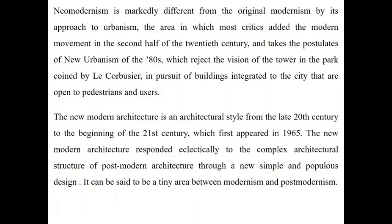Neo-Modern architecture is an architectural style from the late 20th to the beginning of the 21st century, which first appeared in 1965 and then got refined into Neo-Modernism. It responded eclectically to the complex architectural structure of Post-Modern architecture through a new, simple and accessible design, and can be said to occupy a space between Modernism and Post-Modernism.